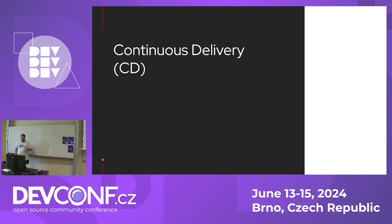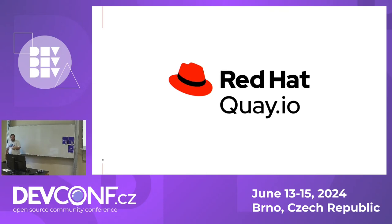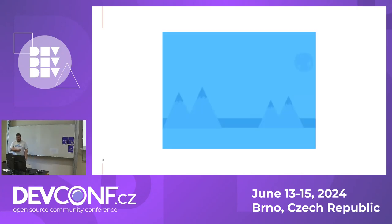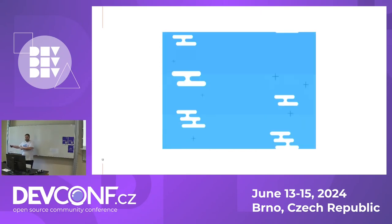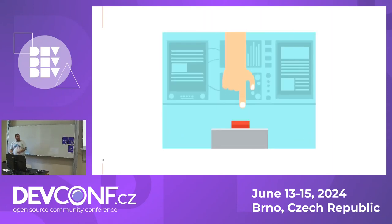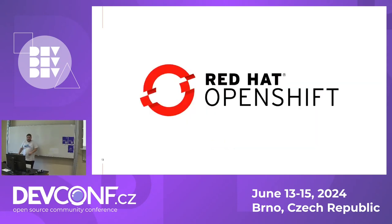Now that we've defined continuous integration, let's talk about the two CD flavors. Starting with continuous delivery: in the CI pipeline we just described, the application code is embedded in a container image that's built and stored in a container registry, such as Quay. This enables us to deploy it in a container orchestration system such as Kubernetes or OpenShift. We can press a button, run a deployment config, maybe an Ansible playbook, or a Terraform infrastructure-as-code configuration, and get it deployed somewhere. Your deployments are triggered by manual action — when you see continuous delivery, always think manual trigger.